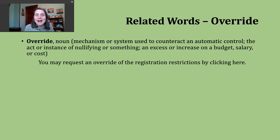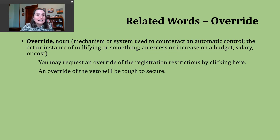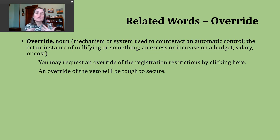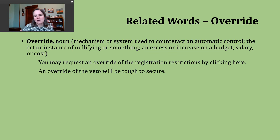A second way to use the noun override is to talk about the act or instance of nullifying something. An example: An override of the veto will be tough to secure. Sometimes that is debated as bills get passed by very small margins, maybe by a simple majority. At the federal level, and in most states, to override a veto you need two thirds of the voting body to vote in favor. So this sentence is saying that act of nullifying the veto is going to be tough to do.